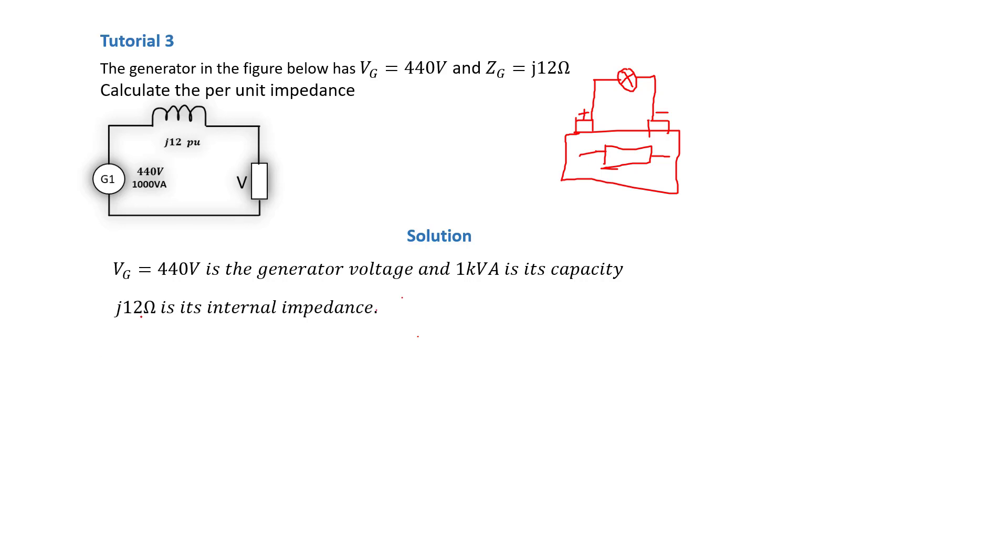So in this case, j12 ohms is the internal impedance of the generator, which is Z_actual in our per unit calculations. So Z_G, the impedance of the generator which equals Z_actual, is equal to j12.